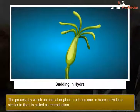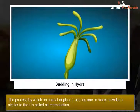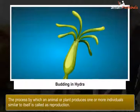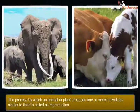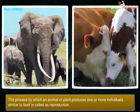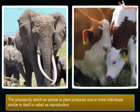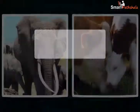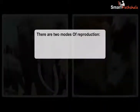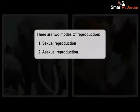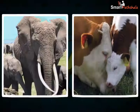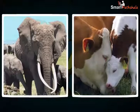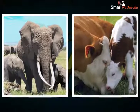Reproduction is essential for the continuation of similar kinds of individuals generation after generation. The process by which an animal or plant produces one or more individuals similar to itself is called reproduction. There are two modes by which animals and plants reproduce, namely sexual reproduction and asexual reproduction. Now let us discuss the various modes of reproduction in animals in this chapter.